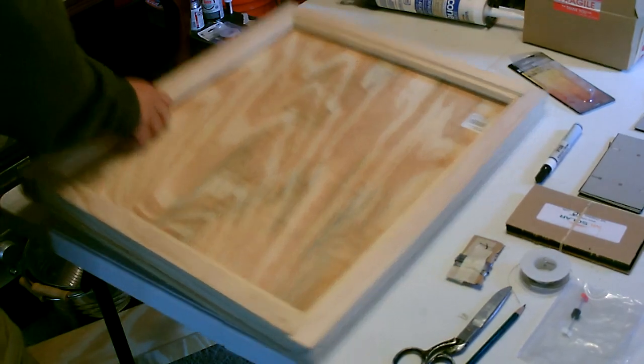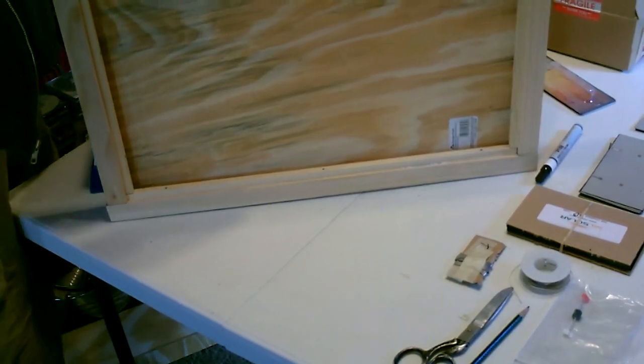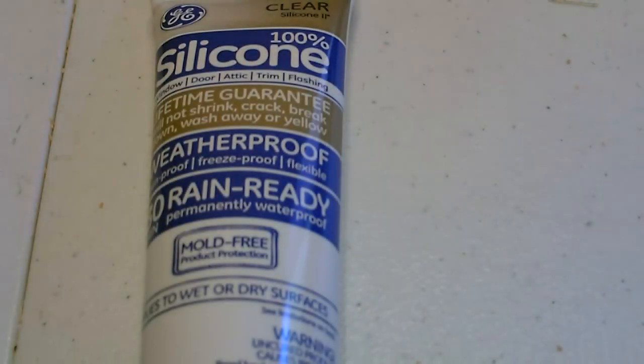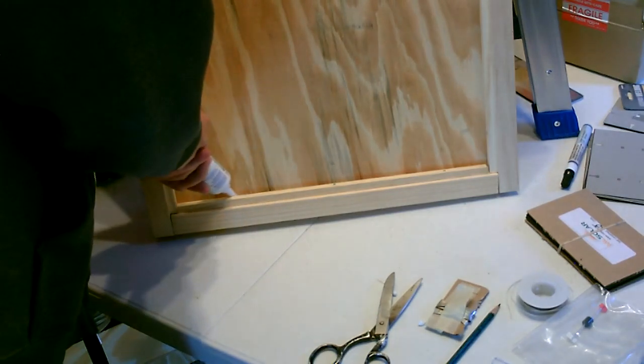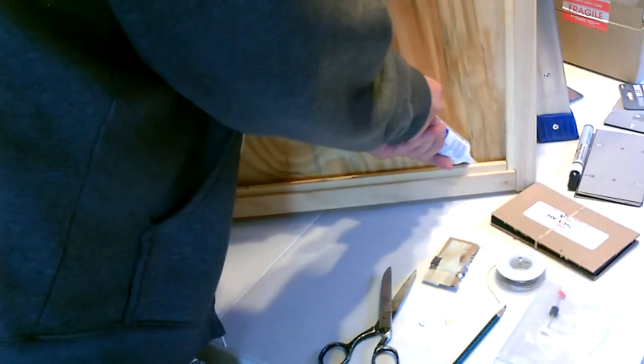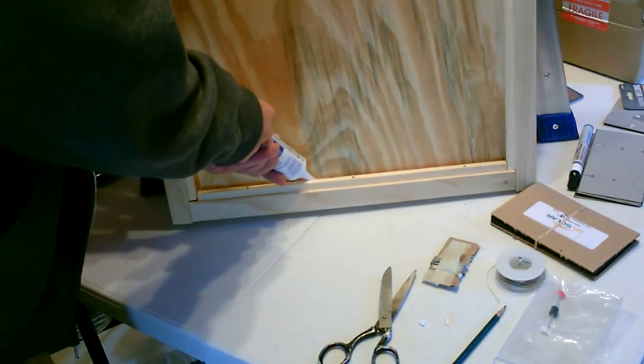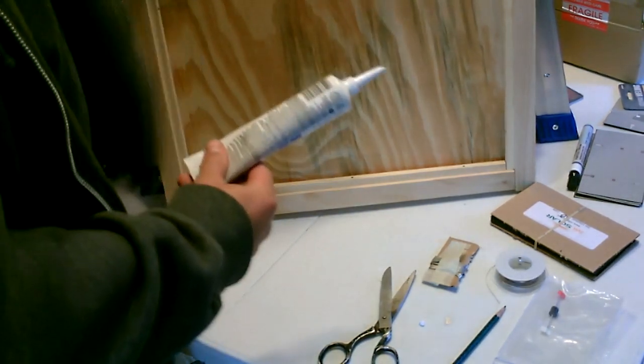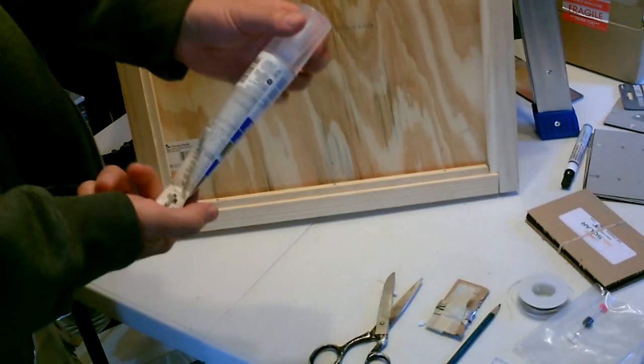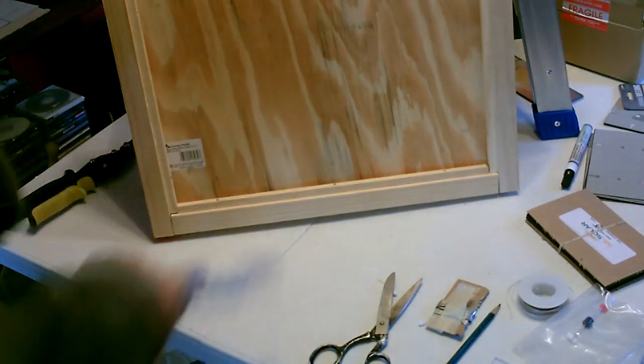All right, let's start adding the sealant now. I'm going to start with the inside. Man, this is beautiful. Perfect line. By the way, these little tubes, first time I ever tried this kind instead of a caulking gun. That is really easy. That went on perfect.